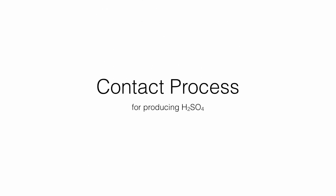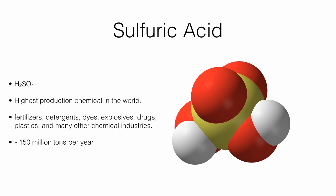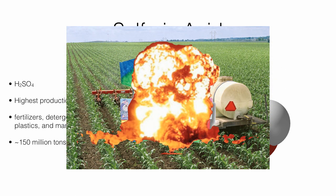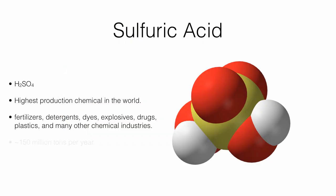Next is the Contact Process for making H2SO4, which is sulfuric acid. It's the highest production chemical in the world. It's used to make fertilizers, detergents, dyes, explosives, drugs, and plastics. In total, the world produces 150 million tons of this every year.